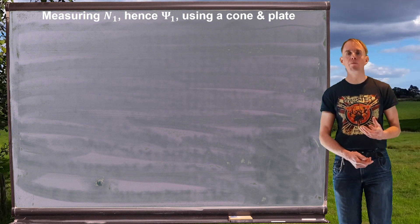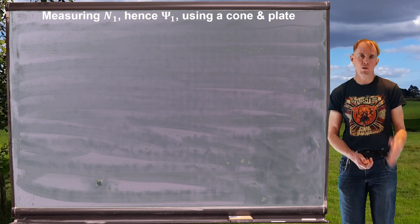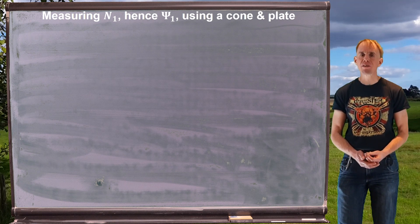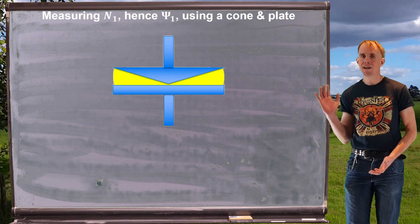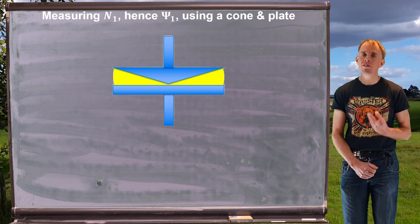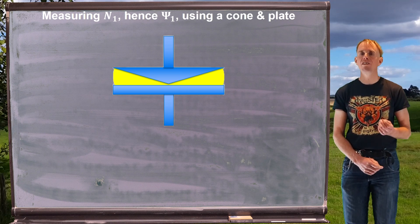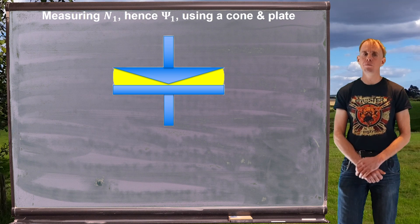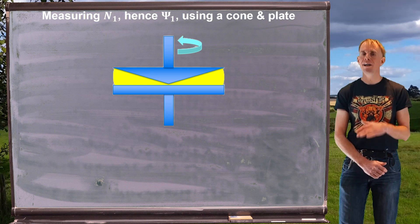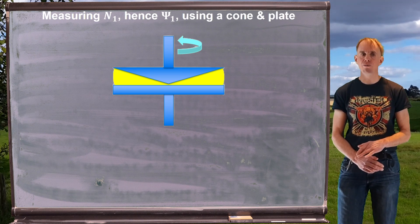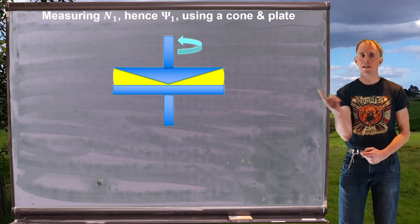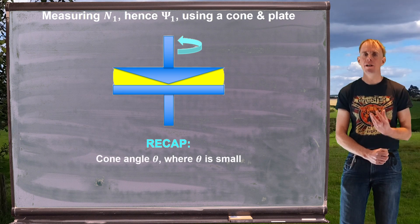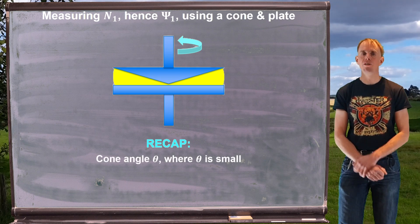Let's think first about measuring the first normal stress difference N1, and consequently Ψ₁. We can do this using a cone and plate tool. As we've seen in the lessons on rheometry, the nice thing about the cone and plate is that the shear rate is constant everywhere. In this example I'm going to rotate the upper cone and keep the lower plate stationary, so a flow field is set up in the rotational direction, and we need to think about how the shear rate develops as a result of that rotation.